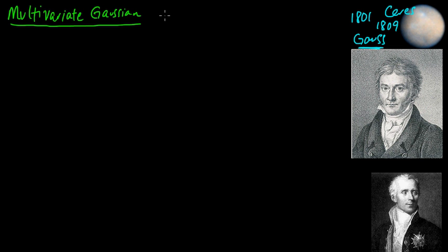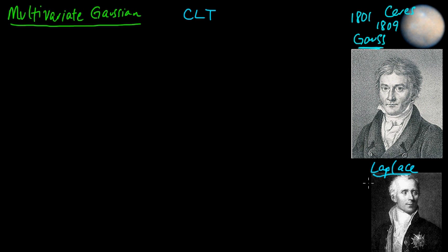Why is it that the Gaussian distribution pops up everywhere in statistics? I'm sure you've seen it — the bell curve. The reason is what's called the central limit theorem, or CLT. I have another video on the CLT, so I'm not going to go into that. But this person here is Laplace, Pierre-Simon Laplace. He was also a giant of mathematics around the same time as Gauss — a French mathematician — and Laplace lived from 1749 to 1827. Laplace gave the first proof of the central limit theorem in 1810.